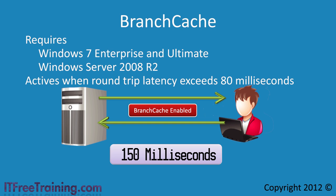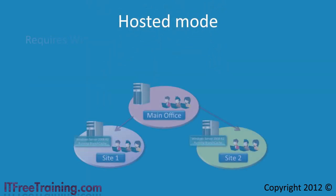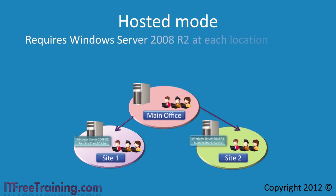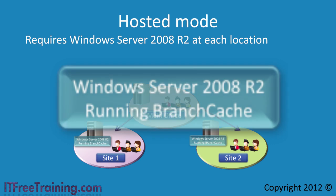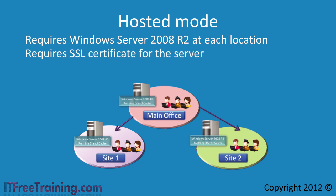Branch Cache can operate in two different modes. The first mode is hosted mode. Hosted mode requires Windows Server 2008 R2 at each branch location. The data, when transferred across the network, is encrypted with SSL encryption, so the server also requires an SSL certificate.